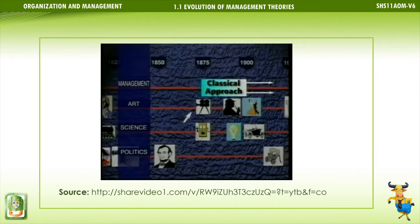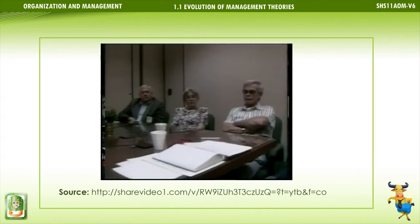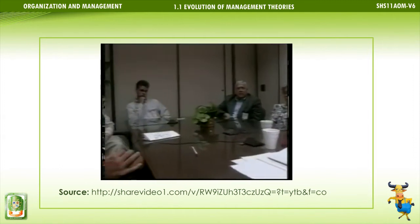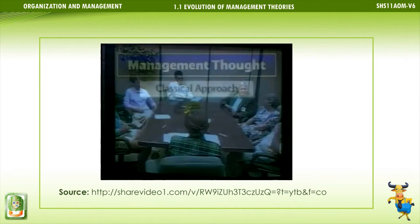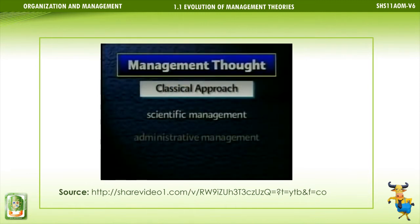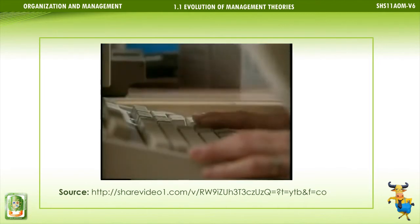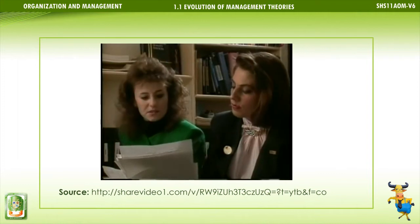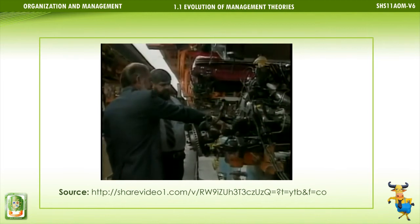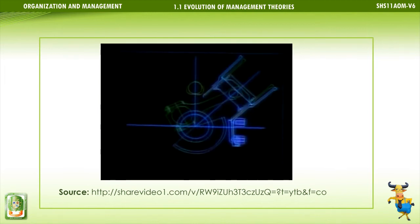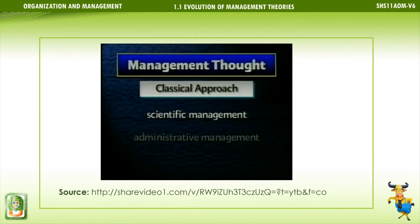The classical approach to management emphasizes the manager's role in the formal hierarchy of authority. It focuses on the task, machines, and systems needed to perform the task efficiently. The classical approach has two components: scientific management and administrative management. An effort to blend the study and functions of engineering with those of business economics came to be known as shop management, which gave way to scientific management — a discipline that emphasizes improving the efficiency of work by the systematic and scientific study of work methods, tools, and performance standards.